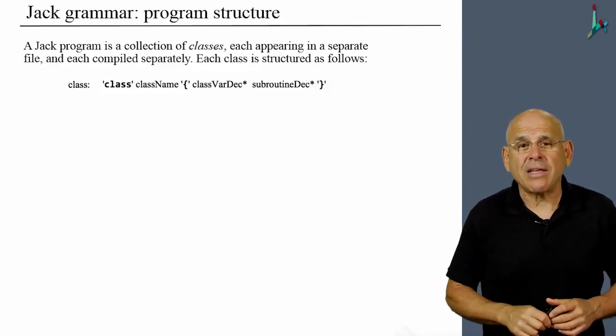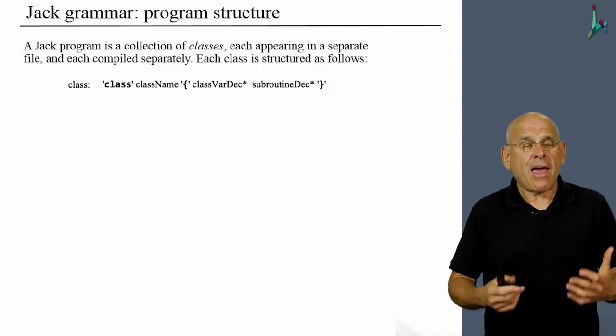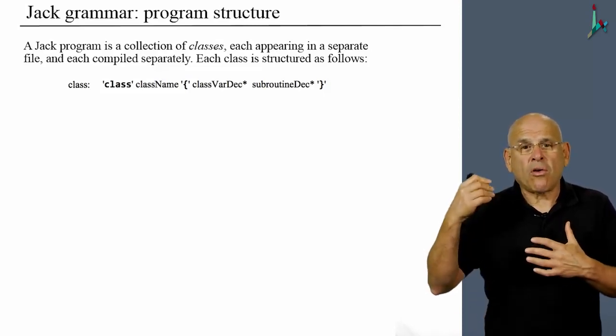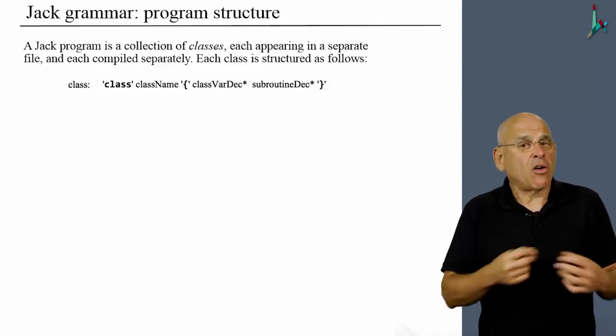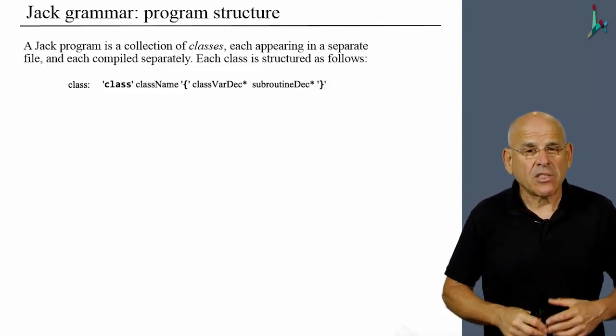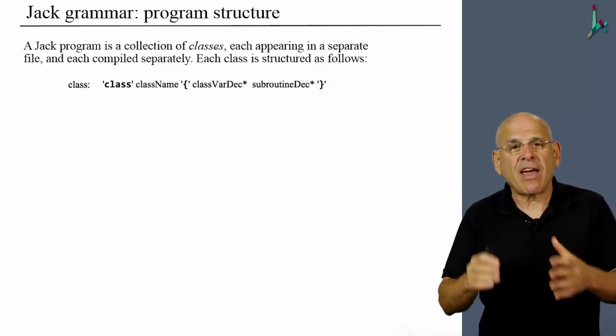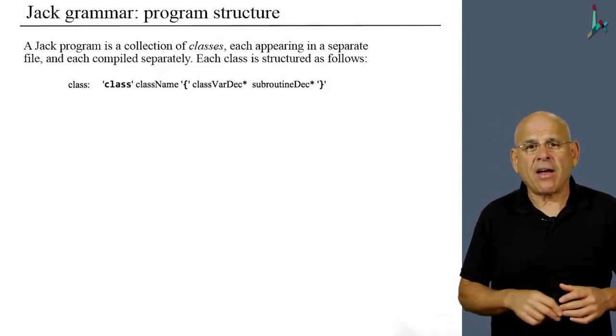Then we have curly left paren which begins the definition of the class. Then we may have zero or more declarations of either fields or static variables. So altogether we call this class var dec.